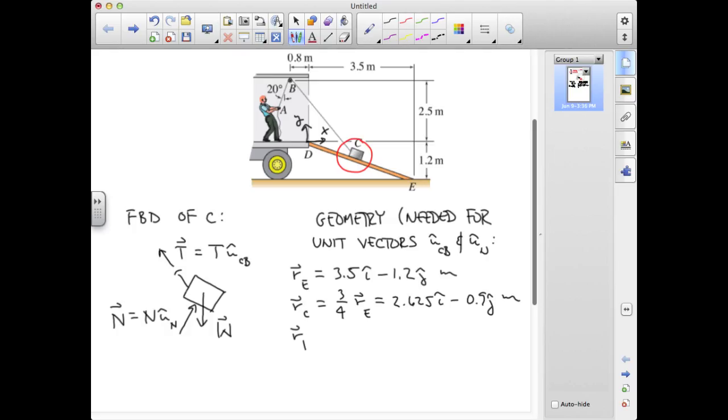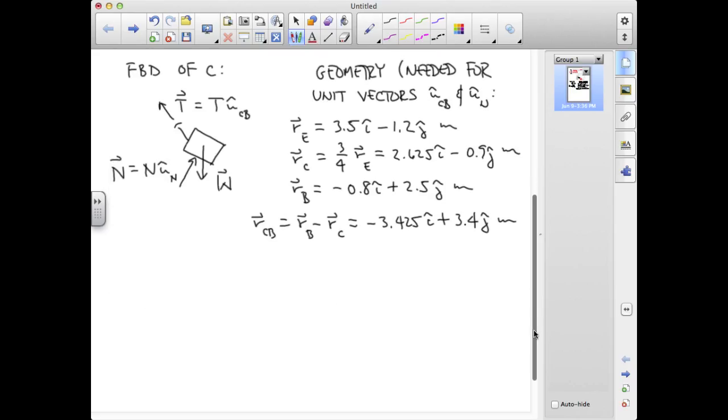The position vector to B is minus 0.8 meters in I plus 2.5 meters in J. The relative position vector from C to B is the difference between the position vector at B and that of C, and that turns out to be minus 3.425 I plus 3.4 J meters. I could find the magnitude of that position vector from the square root of the sum of the squares of its components, and when I do that, I get a magnitude that's equal to 4.826 meters.